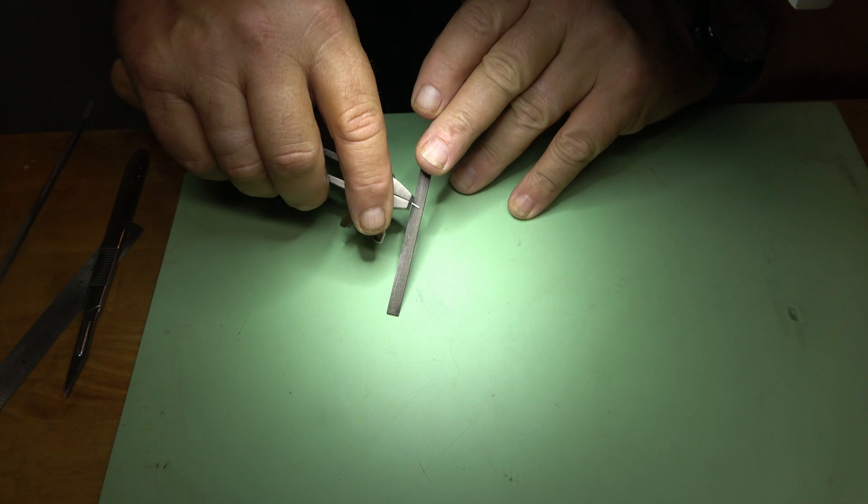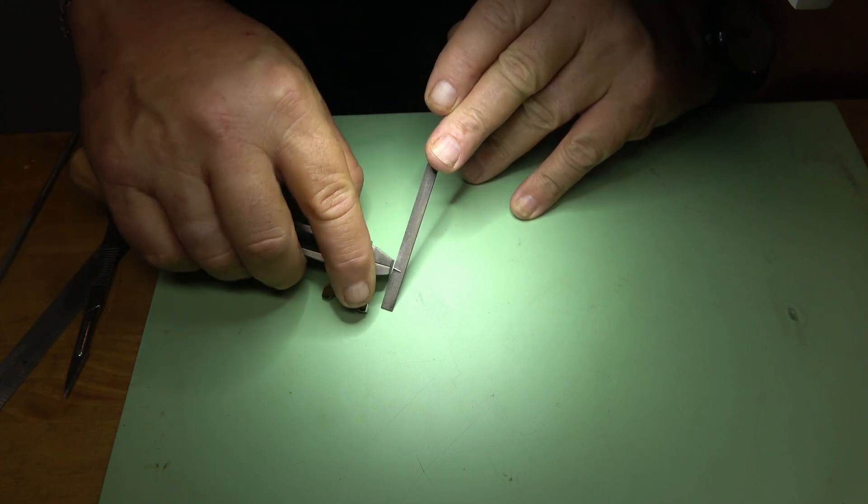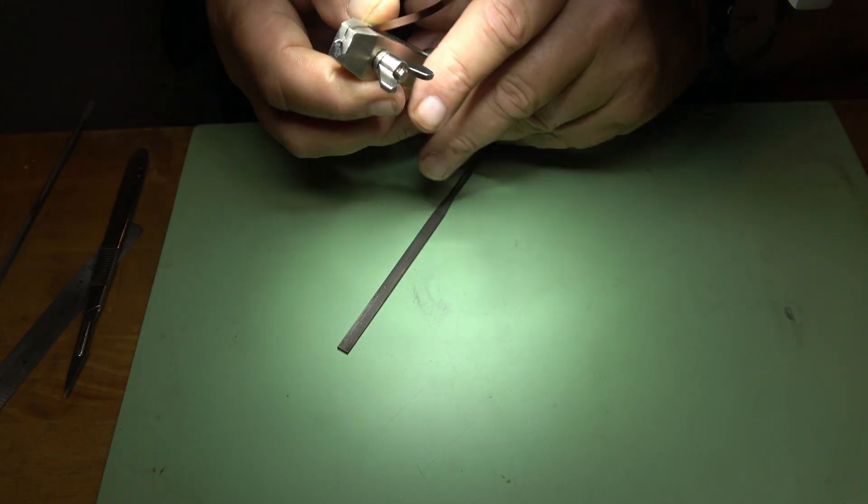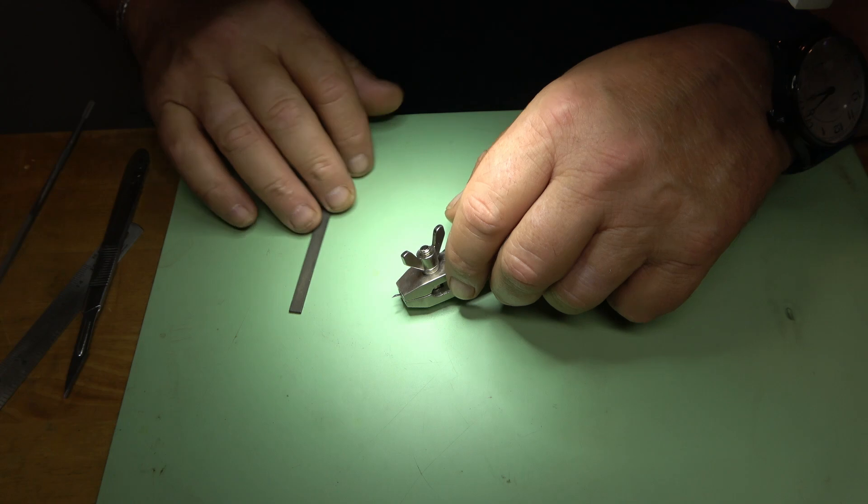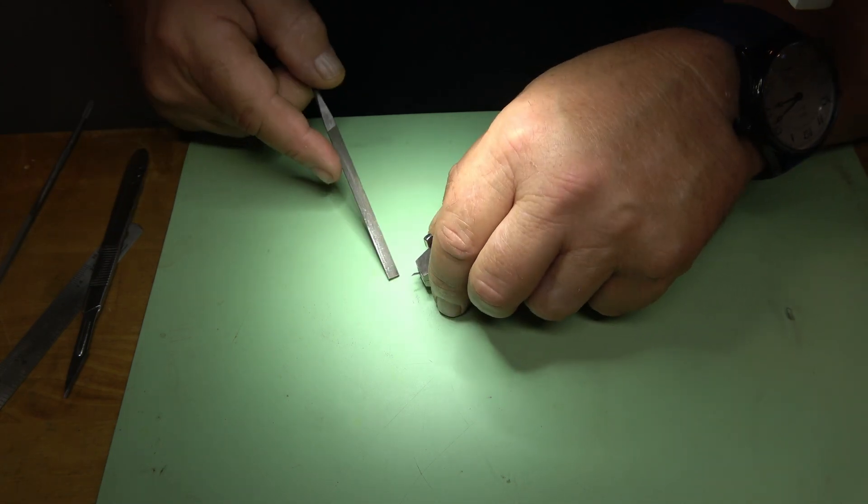Once that's done, now I can clamp onto the blade to further reduce the blade width. And I'm going to use a small flat file.